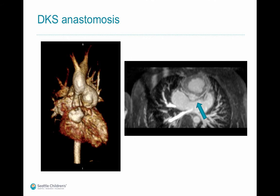This is an example of the DKS or Damus-Kaye-Stansel anastomosis where the hypoplastic aorta is anastomosed with the pulmonary artery. The native hypoplastic aorta still supplies the coronary arteries, so preservation of the native aorta is still important.